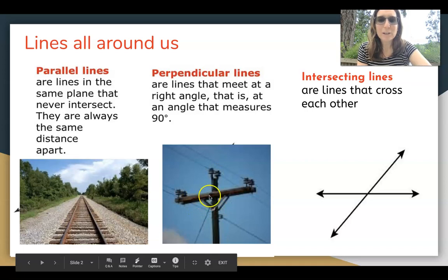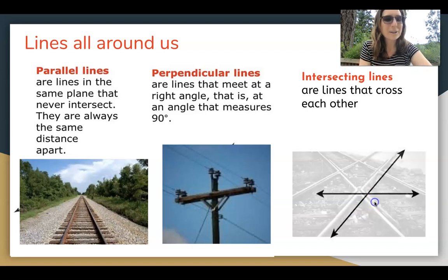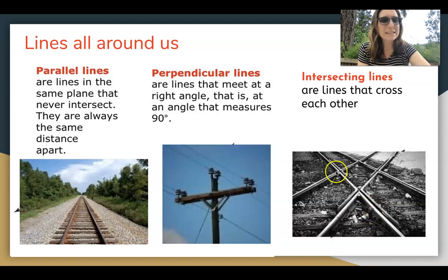We have a pole and a cross beam that form 90 degree angles right here. And the last pair of lines are intersecting lines and these are lines that cross each other and do not form 90 degrees. And this example is lines that have two railroad tracks that cross. These would not be 90 degree angles right here.